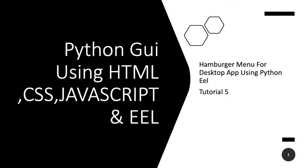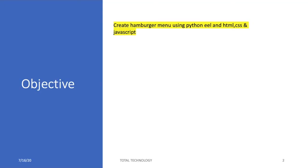What's up guys, this is Ronnie, welcome back to Tutorial 5. In this tutorial I'll be showing you how to create a hamburger menu for our desktop application using HTML, CSS, JavaScript, Python, and Eel. The objective is to create a hamburger menu using Python Eel along with HTML, CSS, and JavaScript.